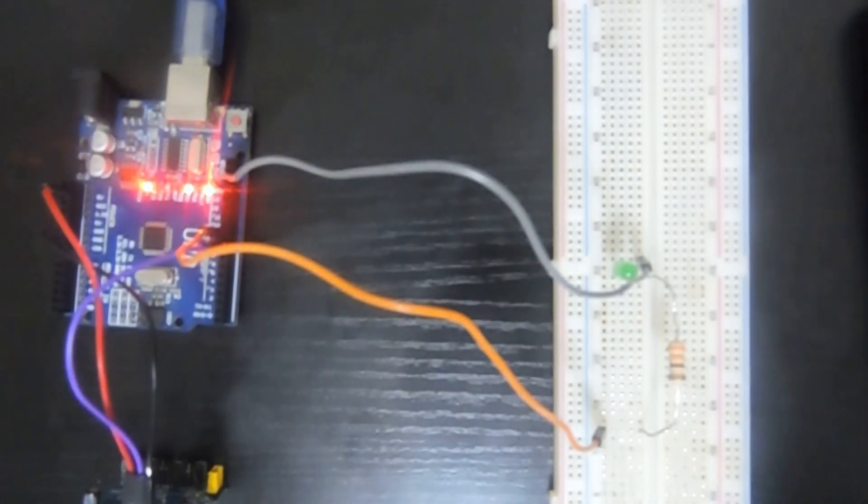Assalamu alaikum and welcome everyone to chapter 39 of the Arduino series. In this video we're going to be covering the HCSR501 motion detector.